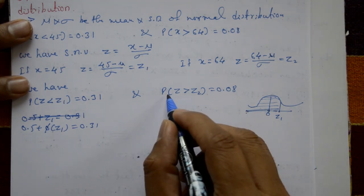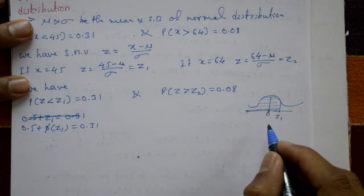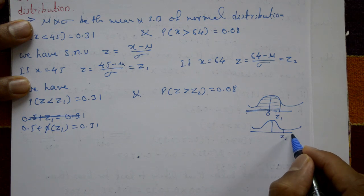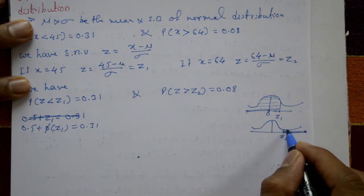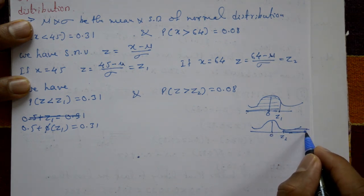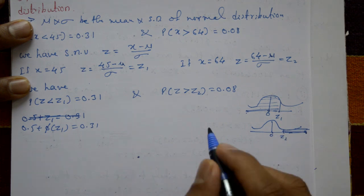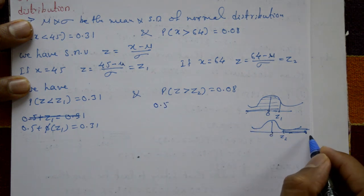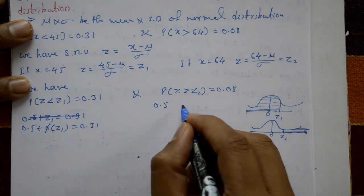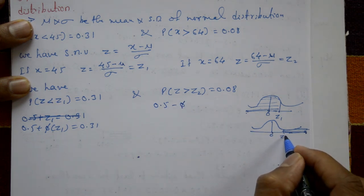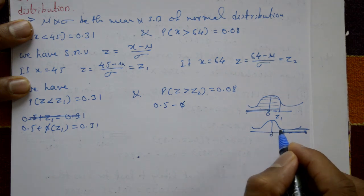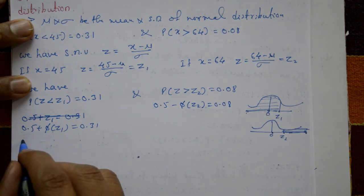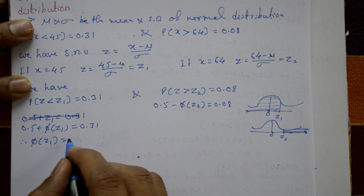For the second condition, probability of Z greater than Z2 equals 0.08. The diagram shows Z2 on the right side. The area to the right of Z2 is 0.5 minus phi of Z2, so 0.5 minus phi of Z2 equals 0.08, and therefore phi of Z2 equals 0.42.